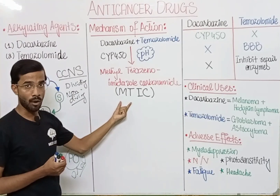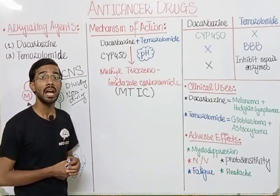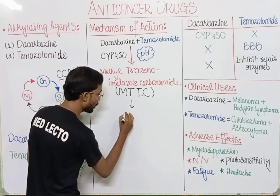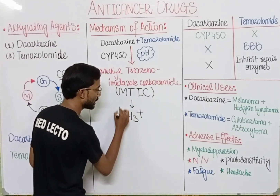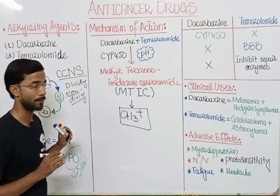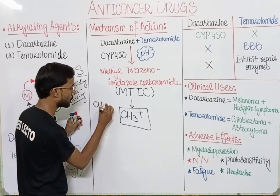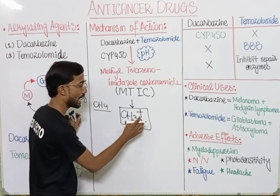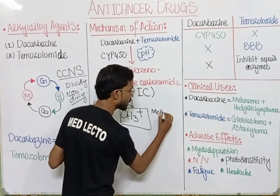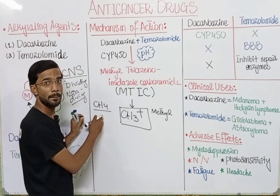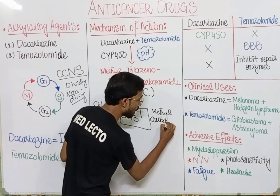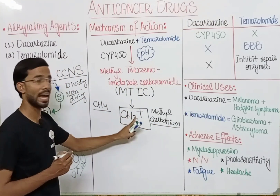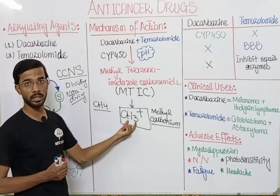The active metabolite MTIC then forms the methylcarbonium ion. The structure of methane is CH4; removing a hydrogen gives the methyl group. The term 'carbonium' means the carbon atom carries a positive charge. So the methylcarbonium ion is a positively charged methyl-carbon species.